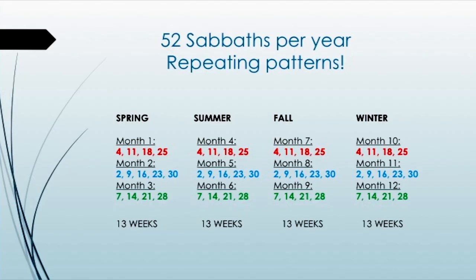In our previous slide, we saw that month 1, the first month of spring; month 4, the first month of summer; month 7, the first month of fall; and month 10, the first month of winter — all of the Sabbaths match and they all begin on the fourth day of that month. Now let's talk about intercalary days in the book of Enoch and why we have them. Why is there a 31st day at the end of every third month preceding the start of the next season?